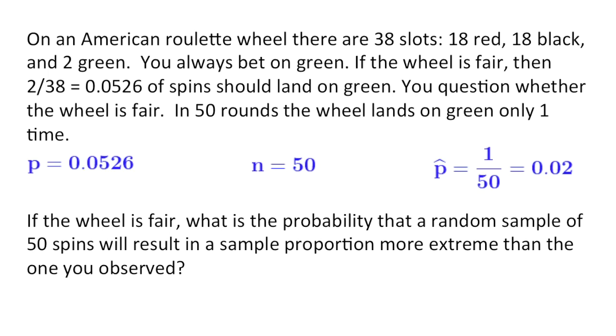Now, one of the key phrases here is more extreme. So, we're not given a direction. We don't want to know what proportion of samples would have more than one spin or less than one spin. We just want to know what proportion would be more extreme than the one that we observed.